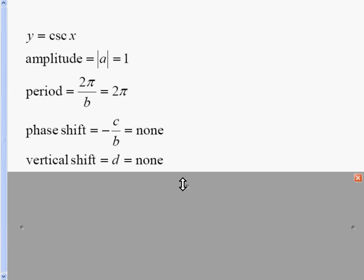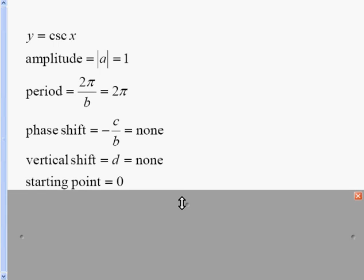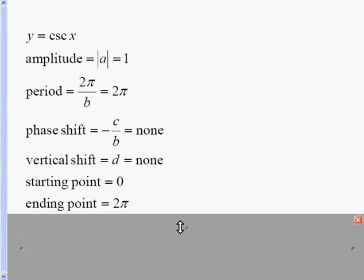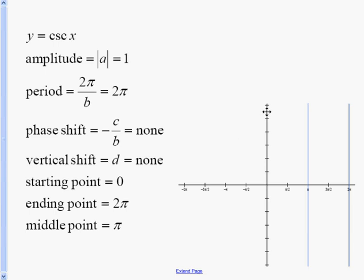With the sine and cosine graphs, I like to have a starting, middle, and ending point. The starting point, if there is no phase shift, would be 0. The ending point, I would add the 2π, and then cut it in half to get the middle point. At these three points — the starting, middle, and ending point — for the cosecant graph, we're going to have asymptotes. Then we start plotting points: a maximum point at π over 2 at the middle of the first two asymptotes, and a minimum point at negative 1 between the second two asymptotes. Then we draw our cosecant curve.